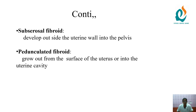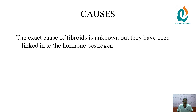The subserosal fibroid develops outside the uterine wall into the pelvis. The pedunculated fibroid grows out from the surface of the uterus or into the uterine cavity.